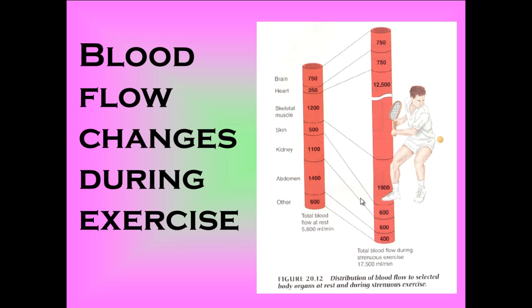The kidney sees a reduction in blood flow. The process of producing urine, and also the abdomen — to do with digestion and excretion — slows down during exercise because blood is all being redirected to the muscles. Other areas of the body also see a reduction, as blood is redirected to the skeletal muscles, skin, and heart, which require more oxygen and glucose to respire.